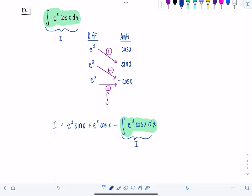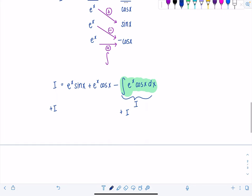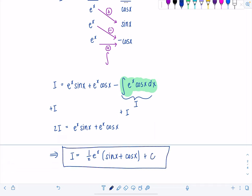So remember for these, we group i on the same side. So I'm going to move them all to the left. And then now I have 2i equals e to the x sine x plus e to the x cosine x. And then dividing by 2, I have i equals 1 half. You can factor out e to the x. Why not? Sine x plus cosine x. Don't forget, plus c. Et voila.